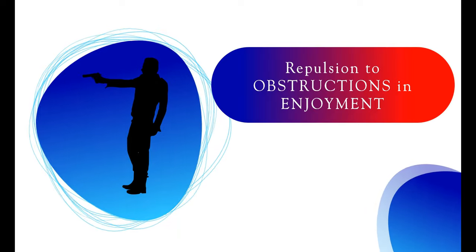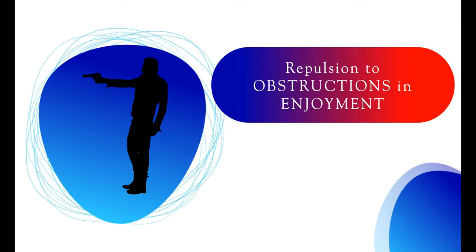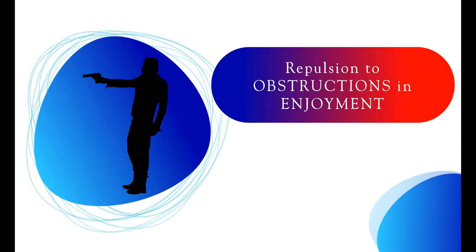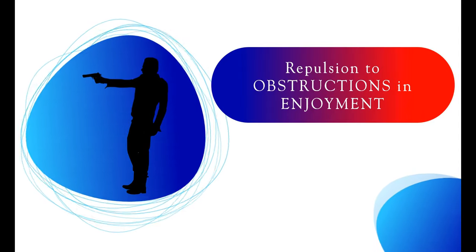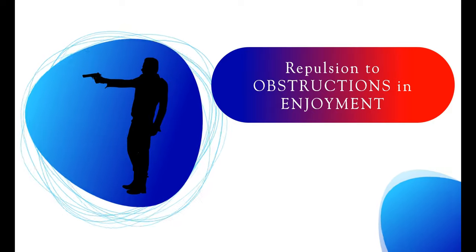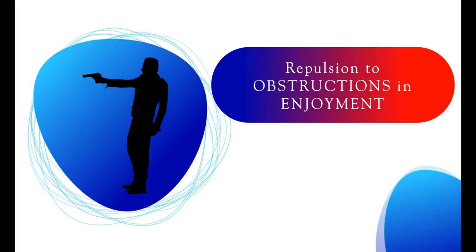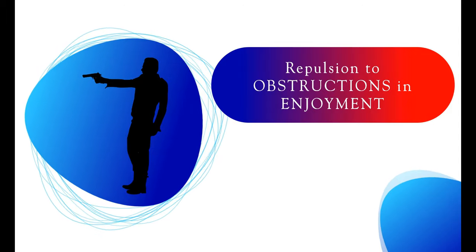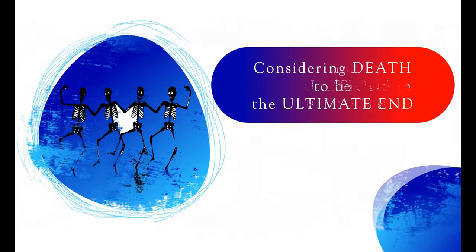The fourth ignorance is repulsion to obstructions in enjoyment. That means the soul tries to remove everyone who comes as an obstruction to his own enjoyment. This leads to anger and envy towards others.